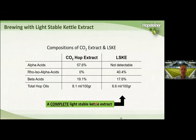When comparing CO2 hop extract to LISKE: CO2 hop extract has about 57% alpha acids, while LISKE has none — it's all been converted to rho. The beta concentrations are similar and the oil concentration is slightly lower with LISKE. Some of these lower numbers are primarily due to the fact that when we make the rho product, there's a little entrapped water that dilutes the concentration of some active ingredients.